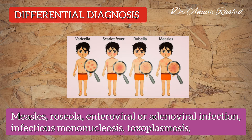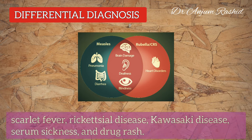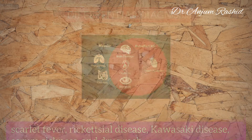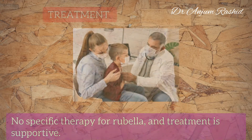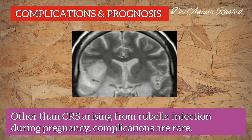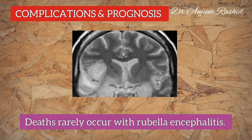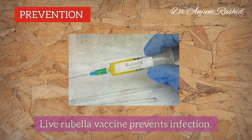The rash must be differentiated from measles, roseola, enteroviral or adenoviral infection, infectious mononucleosis, toxoplasmosis, scarlet fever, rickettsial disease, Kawasaki disease, serum sickness, and drug rash. There is no specific therapy for rubella and treatment is generally supportive. Complications are rare, but death can rarely occur with rubella encephalitis.